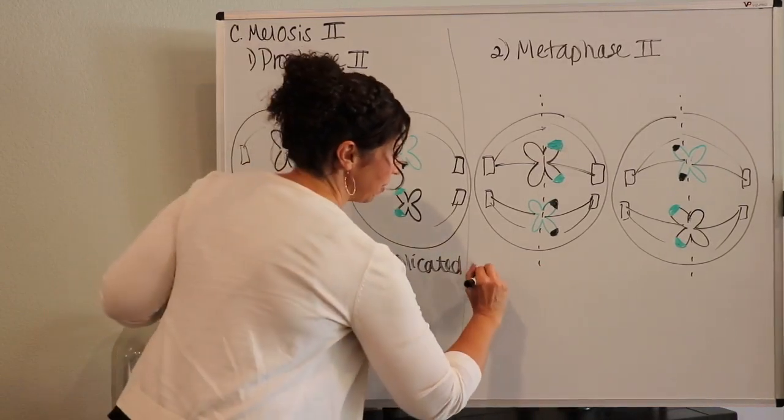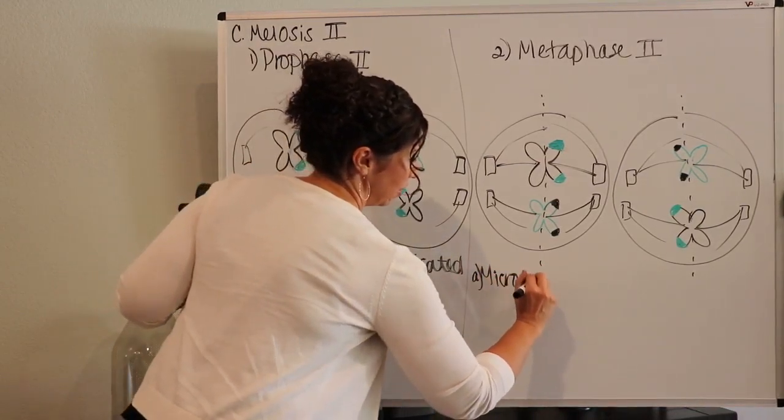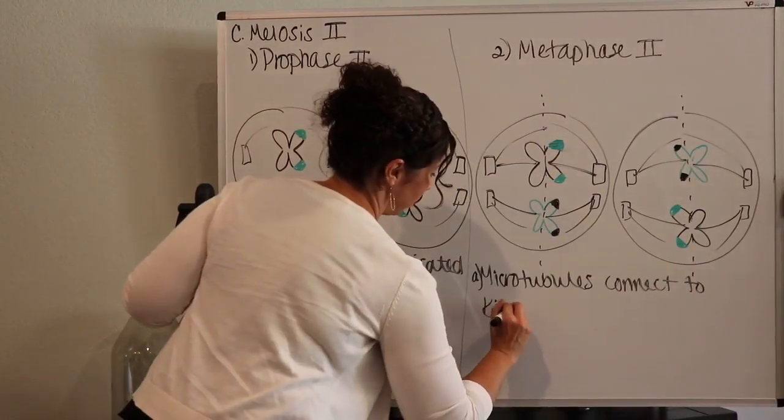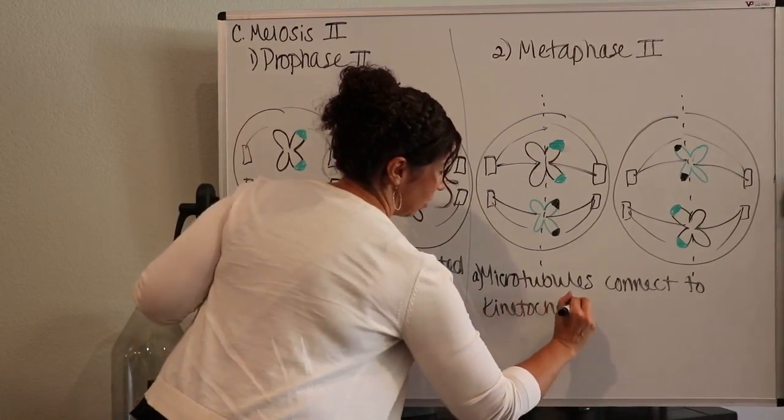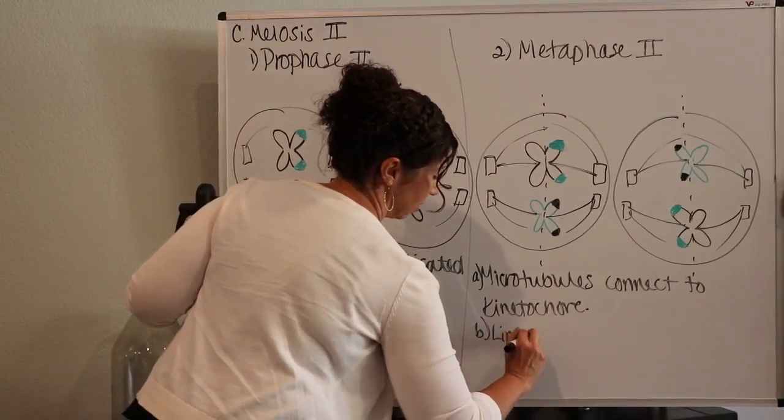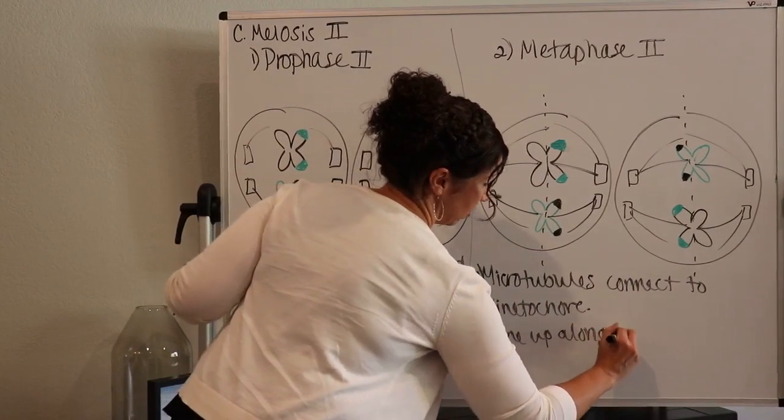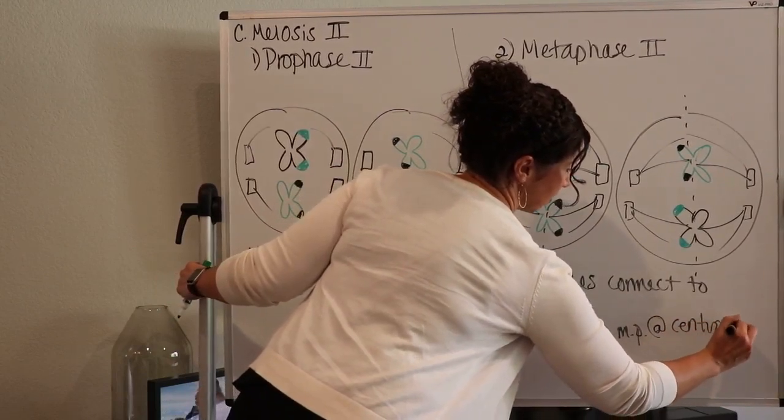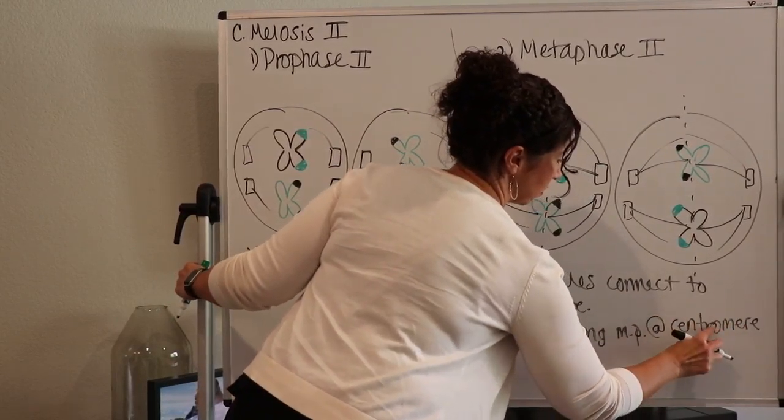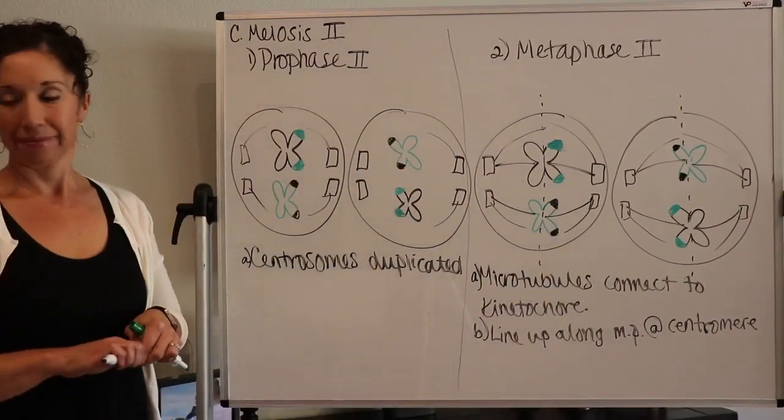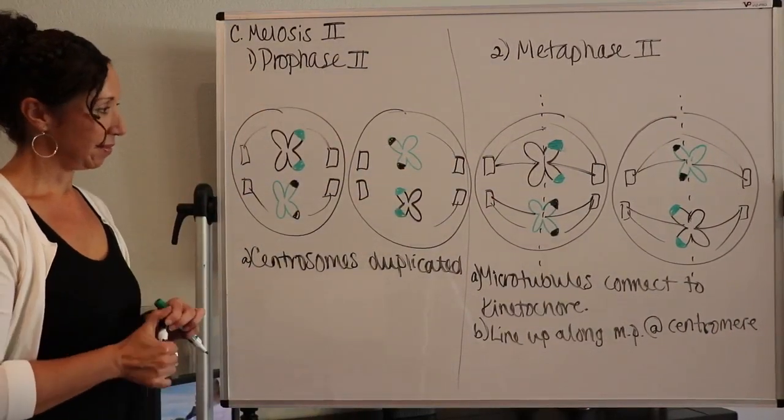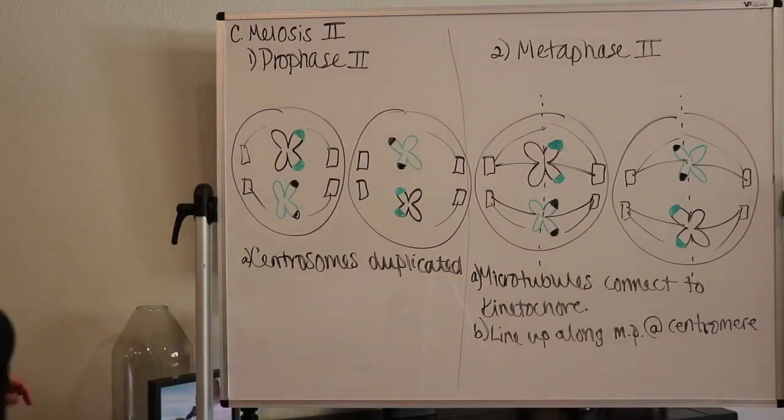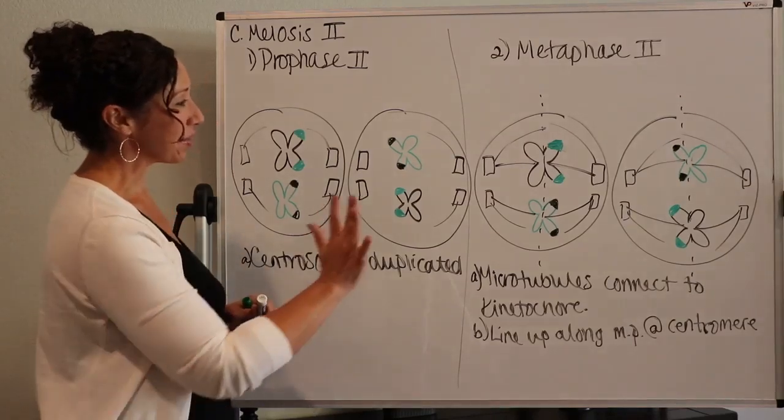So microtubules connect to kinetochore, just like before. And they line up along the metaphase plate. I'm going to call that MP, metaphase plate at the centromere. I'm going to go grab a new pen. I'll be right back. I need some new black ink for you. All right, so there's metaphase two.